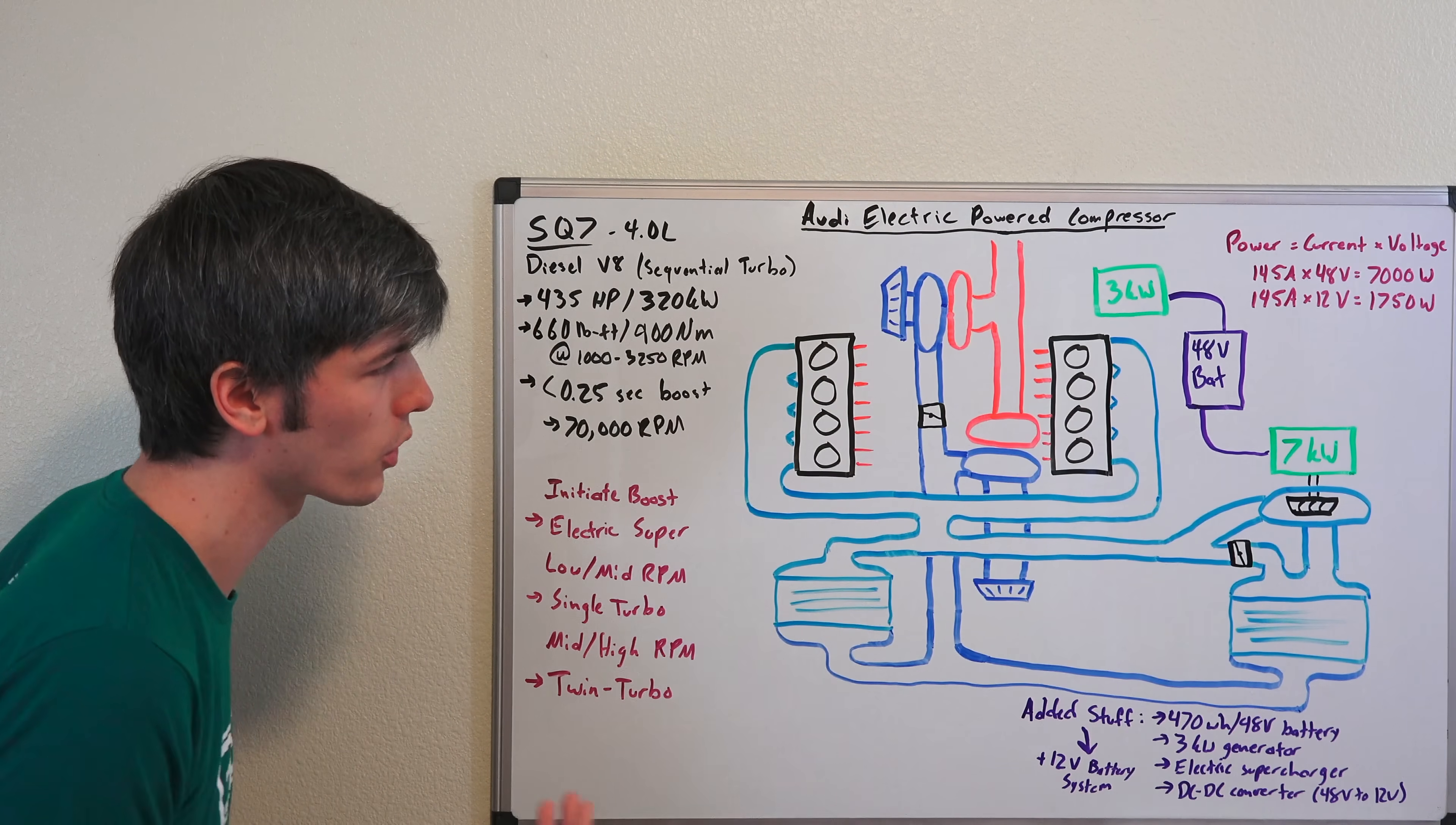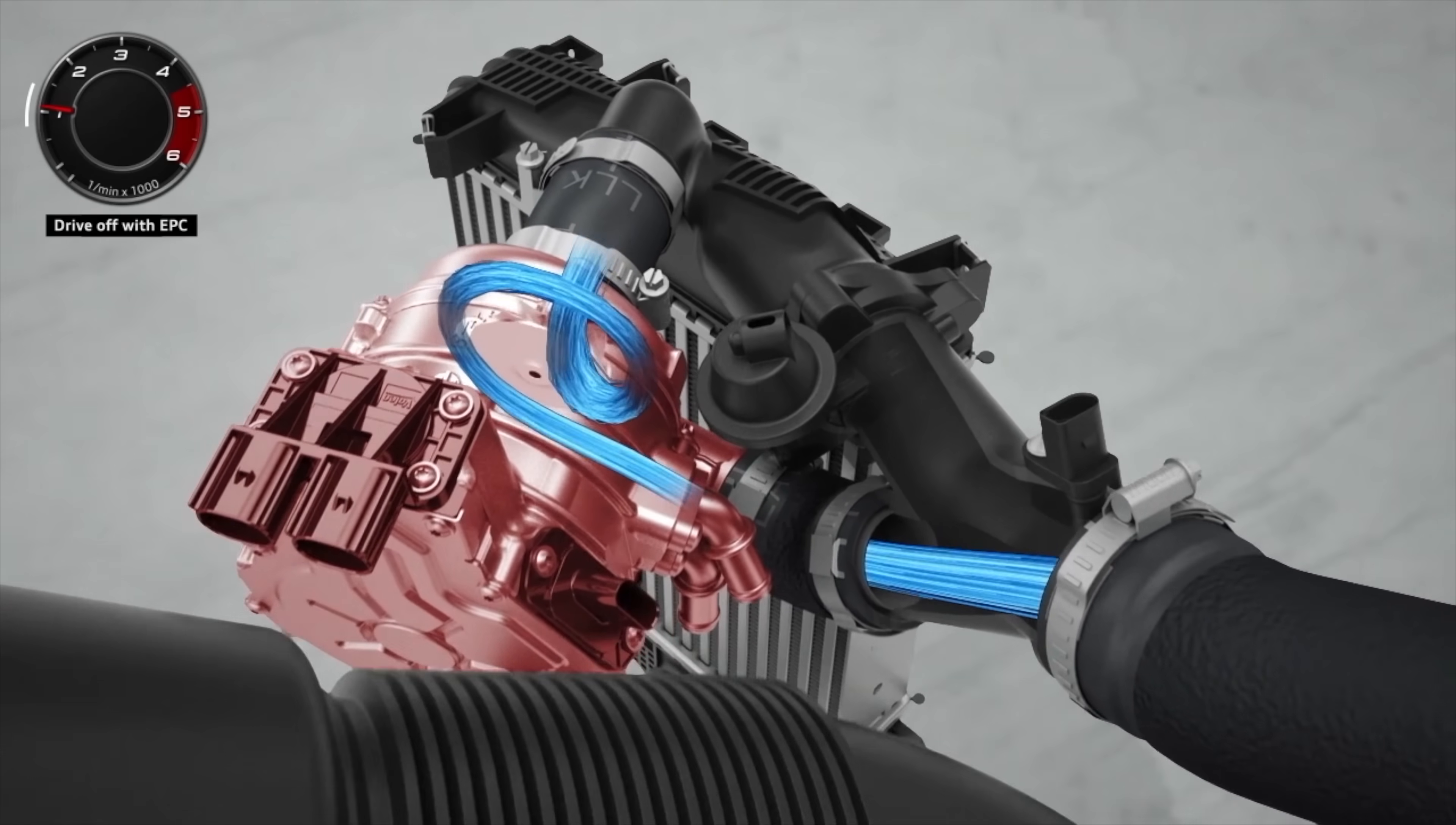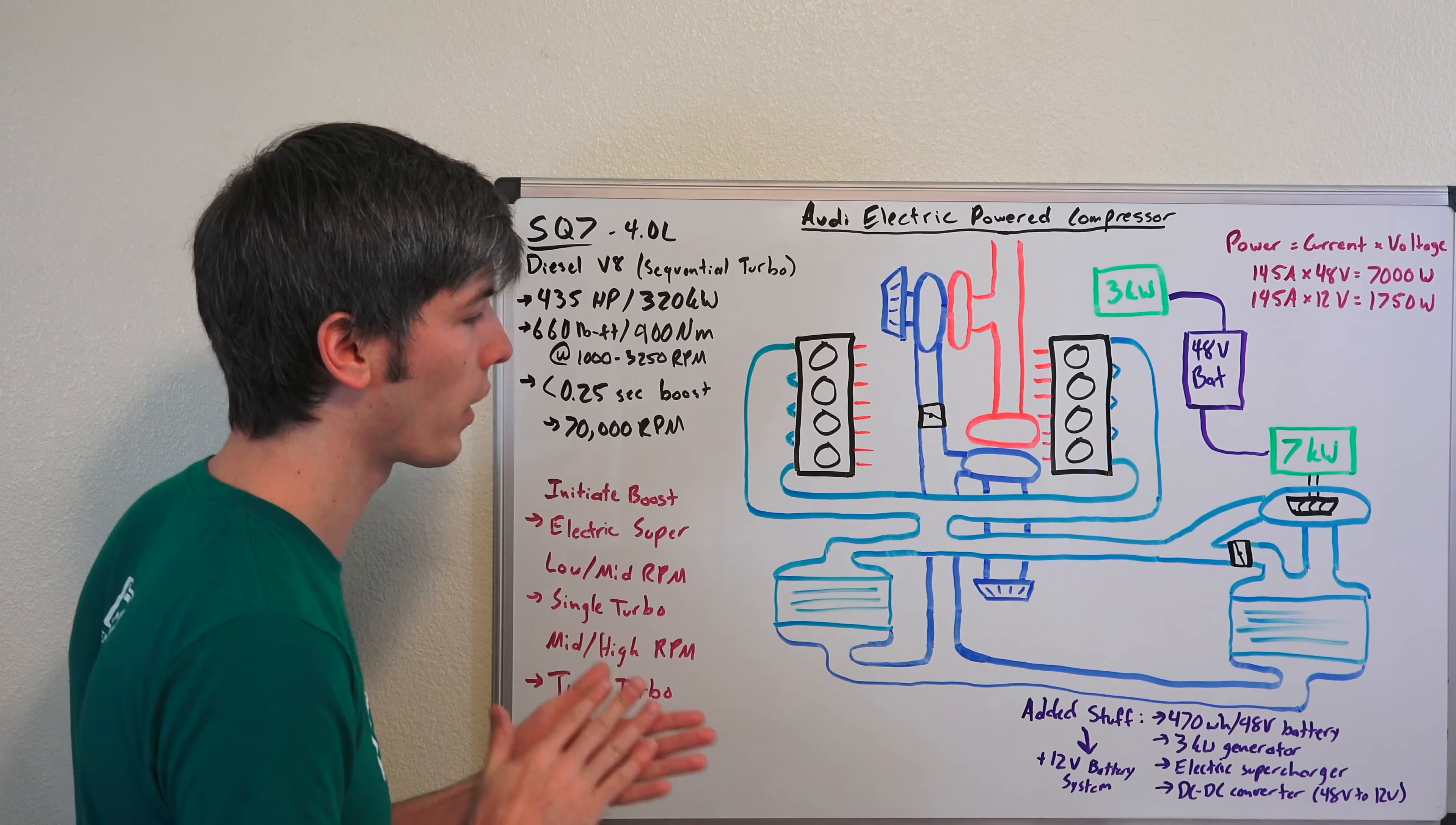But essentially how this electric supercharger works is when you initially press on the gas, you want that instant response, you don't want turbo lag. And so that's where the electric motor comes in. In less than a quarter of a second, it can spool up to 70,000 RPM and provide that immediate boost to fill the delay of turbo lag before the main turbocharger has started spooling up. So you'll have this valve closed off right here, and then the compressor wheel will pull air directly, push that into the eight cylinders. Now that's when you initially press on the gas.